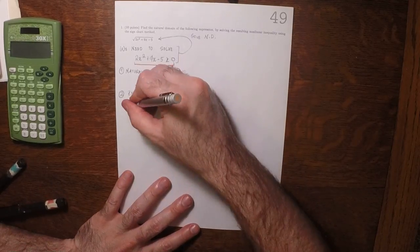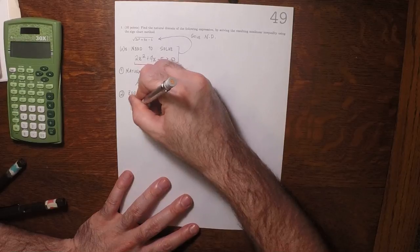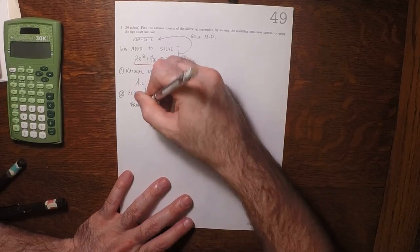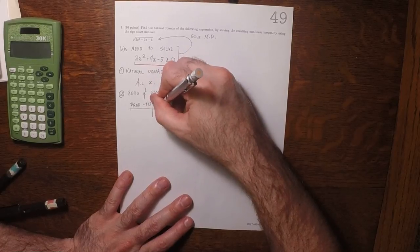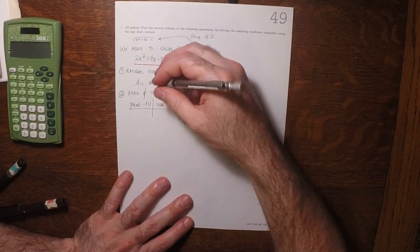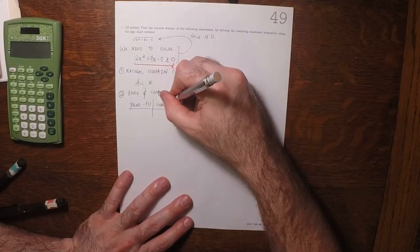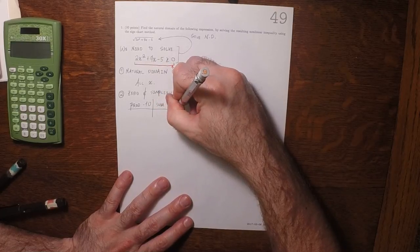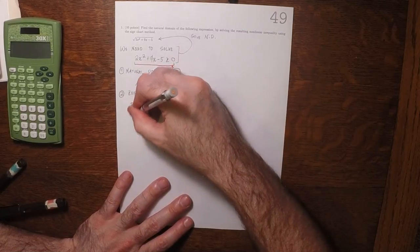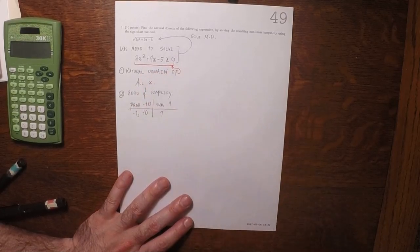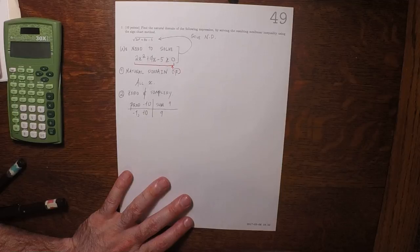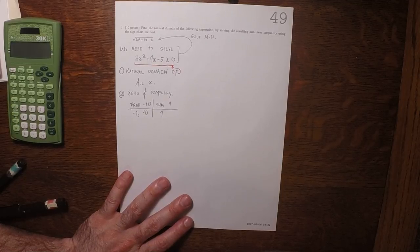Yeah, I think so. So product of negative 10 and sum of positive 9. How about negative 1 and 10? So that'll work.